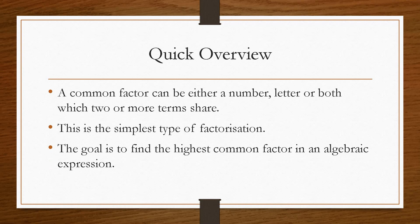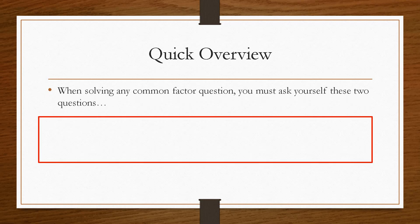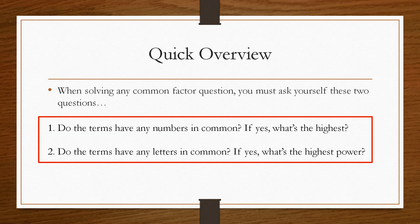So there's two questions that we've got to ask ourselves when we solve common factor questions. First one is, do the terms have any numbers in common? If yes, what is the highest number? Because you're always trying to find it in its simplest form. So you're always looking for the highest value. And the second question, do the terms have any letters in common? Maybe they share an A, maybe they share a B, and you're looking to get the highest power possible. So if you had A squared and A cubed, the highest power that they both share would be A squared.